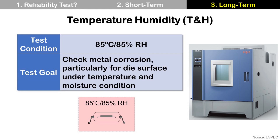Temperature humidity test checks metal corrosion, particularly for die surface metallization under temperature with moisture. Temperature and humidity alone are sufficient for corrosion, but bias can be added — this is called THB (Temperature Humidity Bias) — which can trigger or accelerate metal corrosion. The failure mechanisms are galvanic, electrochemical, direct chemical corrosion, and ion migration. Usually, 1000 hours are used for package qualification.